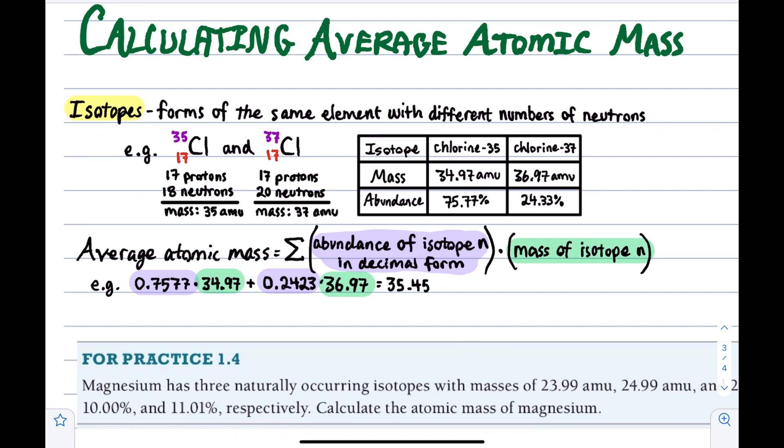Remember that the defining characteristic for any element is how many protons you have. For example, if I have an element with one proton, I know it's hydrogen, because if you look in the periodic table, hydrogen has an atomic number of one. If I change my number of protons to two, that cannot be hydrogen anymore. It has to be helium, because helium has an atomic number of two.